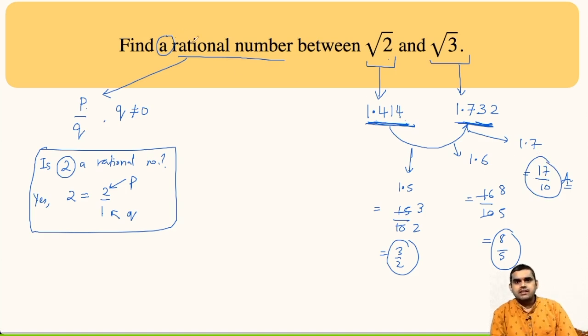So, only one rational number was asked, but I have showed you three rational numbers. So, this is the method by which you can find rational numbers between given irrational numbers.